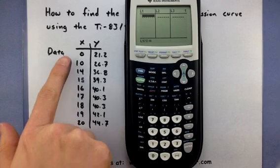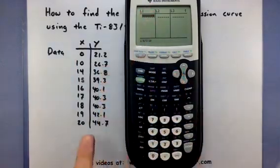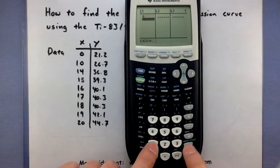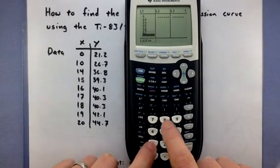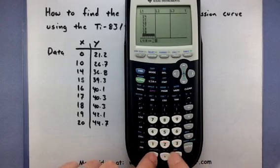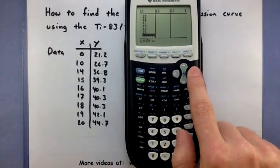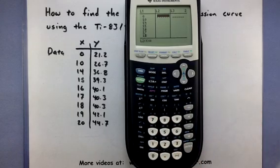We want to put all of our X data into list one and all of our Y data into list two. When you get to the bottom of a column like that, go ahead and use your right arrow over to jump to the next column.